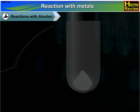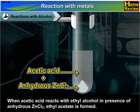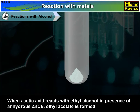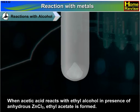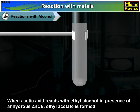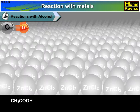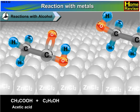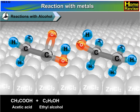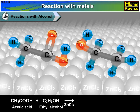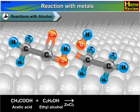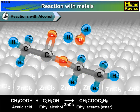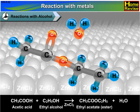Reaction with Alcohol: When acetic acid reacts with ethyl alcohol in the presence of anhydrous ZnCl₂, ethyl acetate is formed. CH₃COOH (acetic acid) + C₂H₅OH (ethyl alcohol) → CH₃COOC₂H₅ (ethyl acetate, which is an ester) + H₂O.